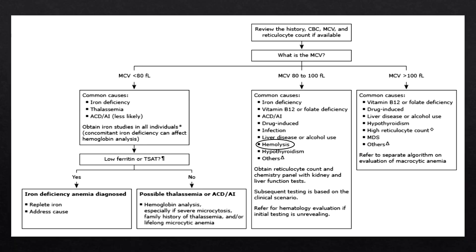In the classic chart used to differentiate anemias, hereditary spherocytosis falls under the hemolysis section. It is a normocytic anemia, meaning an MCV of 80 to 100, and it is a hemolytic anemia at its core, so it falls under the hemolytic subcategory of normocytic anemias.